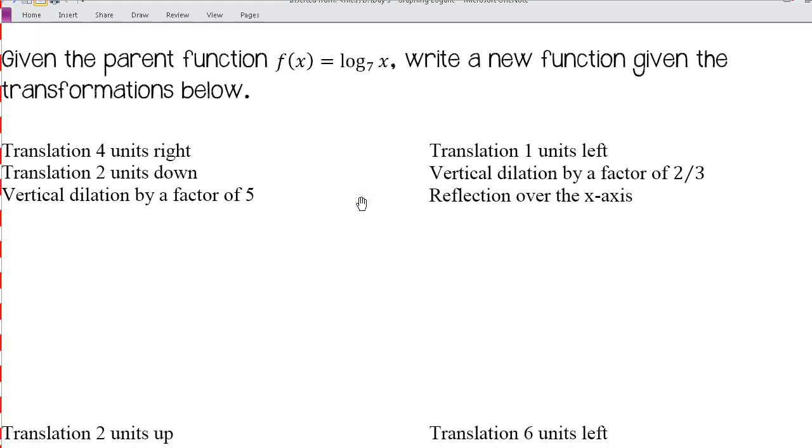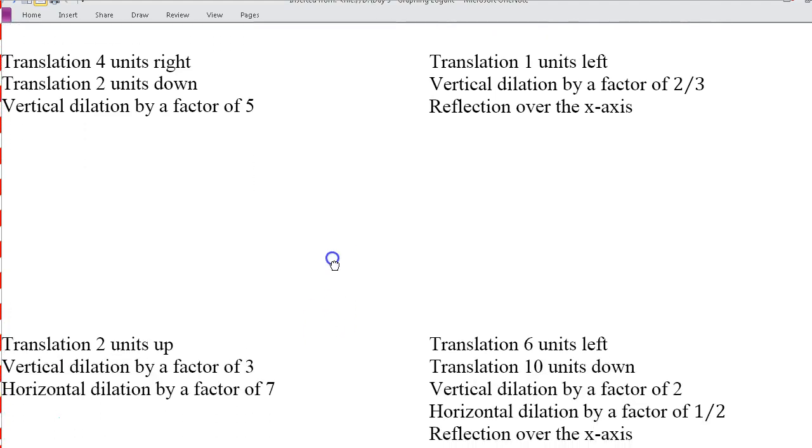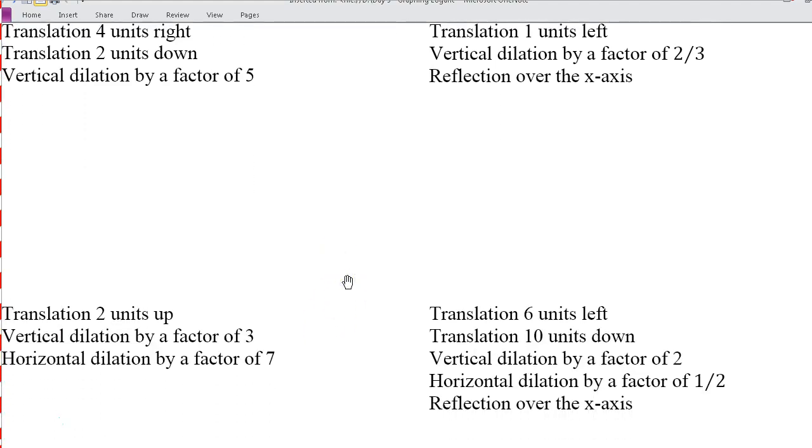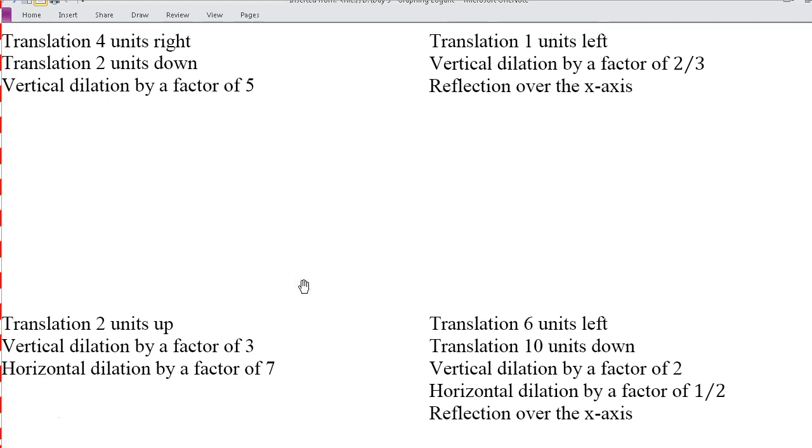Okay, so given the parent function f(x) = log₇(x), we want to write a new function given the transformations below. Let's take a look at the first one together, and then I'll let you do the other three on your own. We're starting with y = log₇(x), and we want to transform this. We want to translate four units to the right, translate it two units down, and we want a vertical dilation by a factor of five.